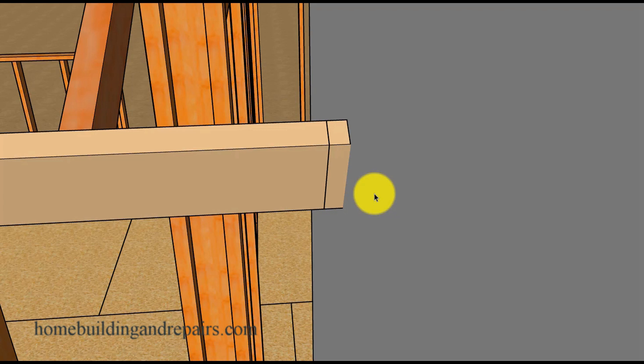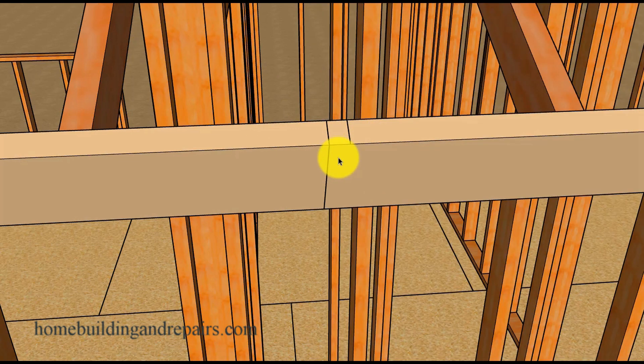And since we're going to be putting lap siding on, I'm going to come an inch away from the face of the wall framing so that I can draw a line and then cut the fascia board.